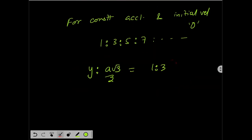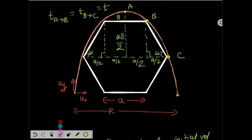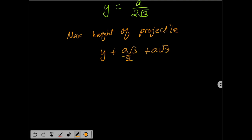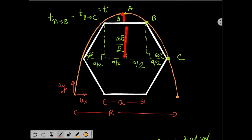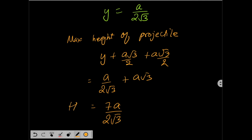From the ratio, y divided by a√3/2 equals 1/3, giving y = a/(2√3). Now we can find the maximum height of the projectile. The total max height equals y + a√3/2 + a√3/2, which works out to a/(2√3) + a√3 = 7a/(2√3). This is the maximum height of the projectile.